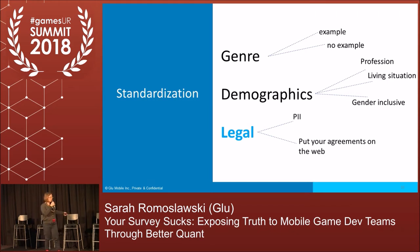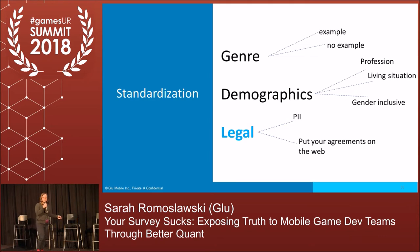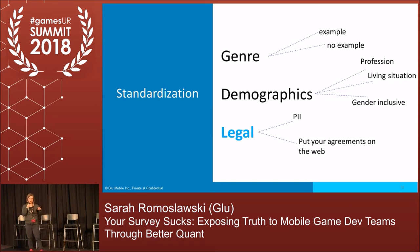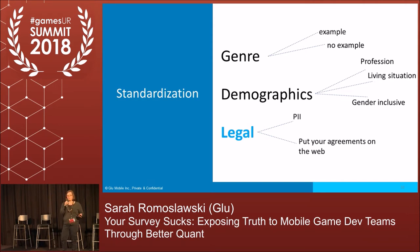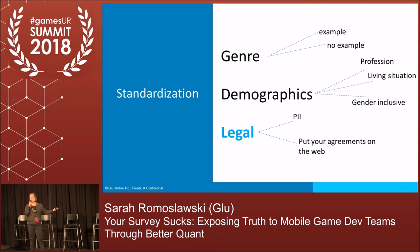For standardization, it's just a matter of picking something — like whether to use examples when asking about genre — and sticking with it so you can start comparing data over time. Build templates for how you ask demographics and have that live in your survey tool so you can just add your specific questions. Most importantly, work really closely with your legal team, because privacy is a user experience issue. Work with legal to follow all the laws when collecting personally identifiable information. We put our user research agreement on the web and always link to that, which also links to Glue's privacy policy and terms of service.